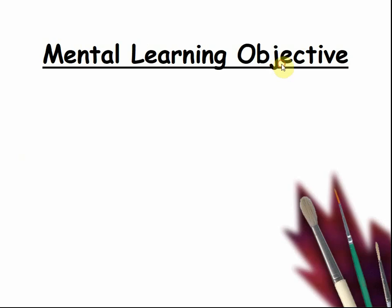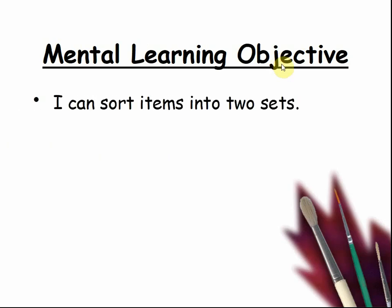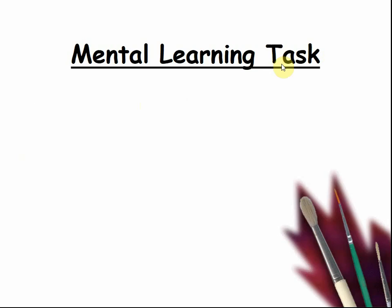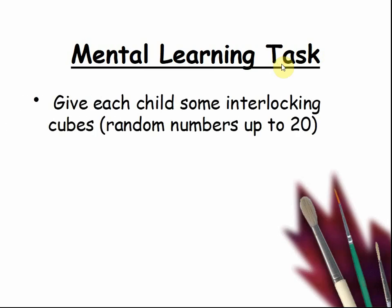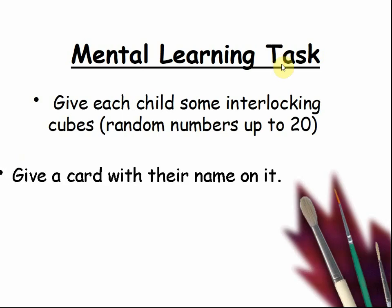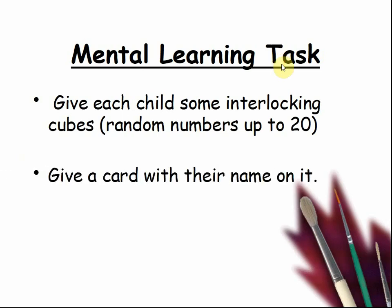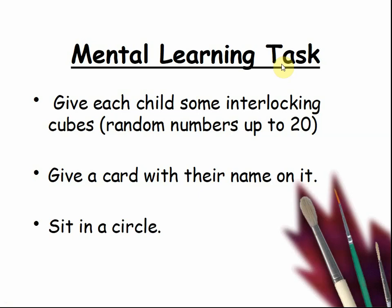Mental learning objective: I can sort items into two sets. Mental learning task: give each child some interlocking cubes with random numbers up to 20. Pause the video while you do that. Give a card with their name on it and sit in a circle. Pause the video while you get everything organised.